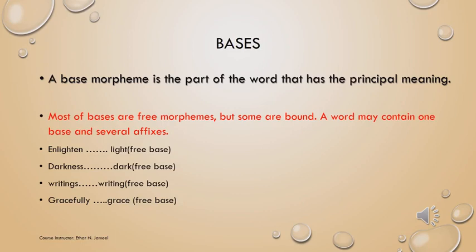The next example is 'writings.' This word consists of three morphemes: write, ing, and s. Write is a free morpheme. Ing is a bound morpheme. S is a bound morpheme. Write can stand alone with meaning, so it is a free morpheme; ing and s cannot stand alone with meaning, that is why they are bound morphemes. The base in this word is write. Writings comes from write, so the meaning of write is the principal meaning of the word writings. That is why write is the base, and it is a free base because it is a free morpheme.